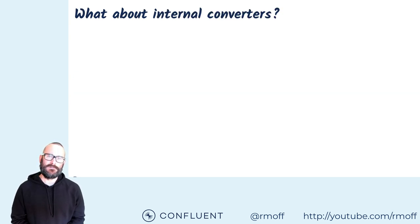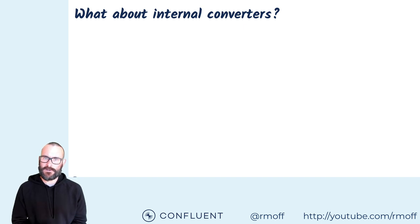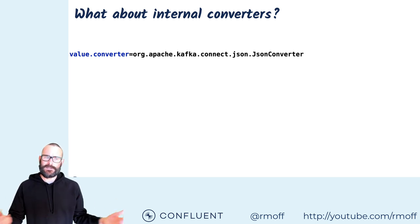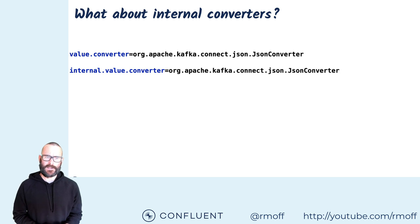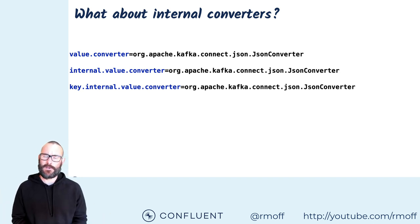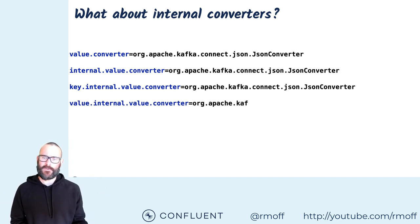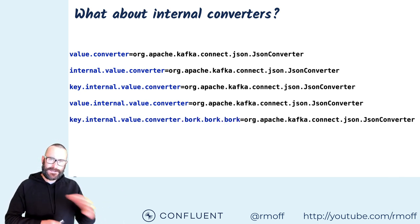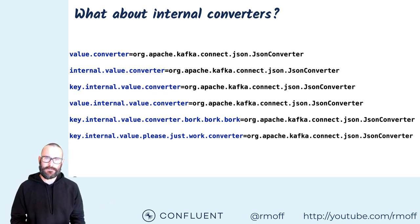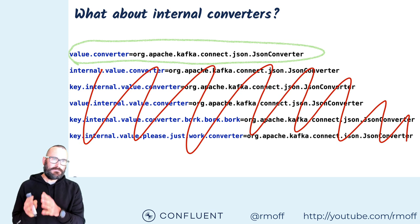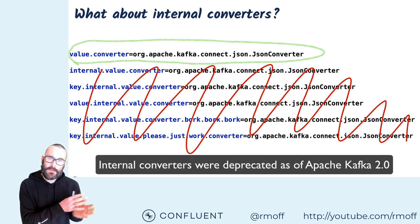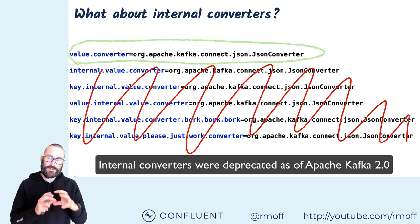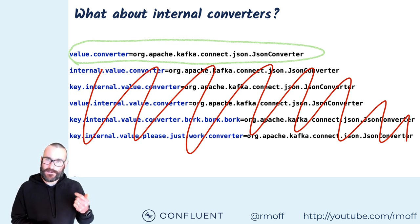In previous versions of Apache Kafka, there was a configuration called the internal converters which was exposed. This caused lots of confusion because people would add more and more internal converter settings trying to get things working, just hoping something would work. Since Apache Kafka 2.something, those internal connector configurations have been deprecated, and you just specify your value converter and your key converter.